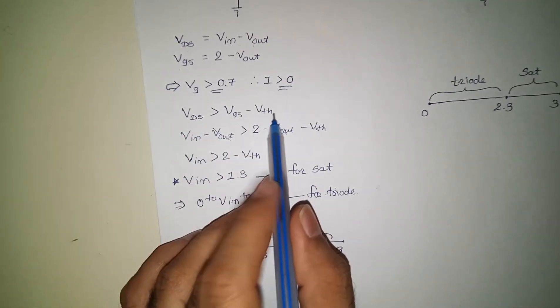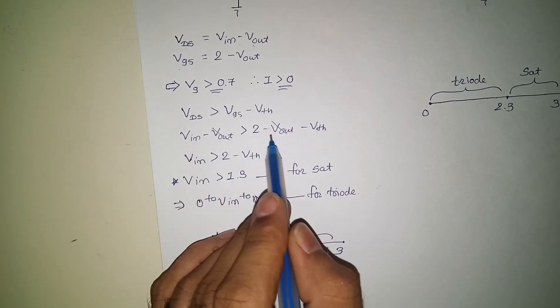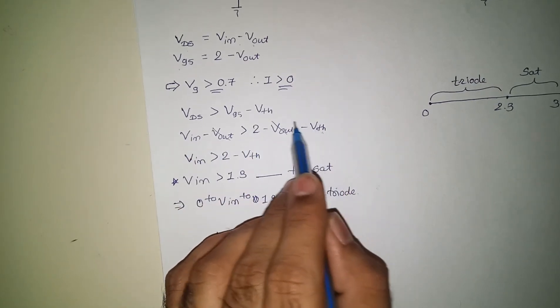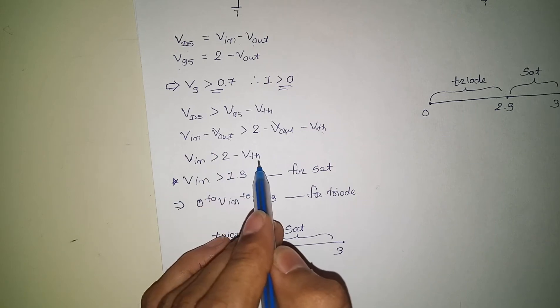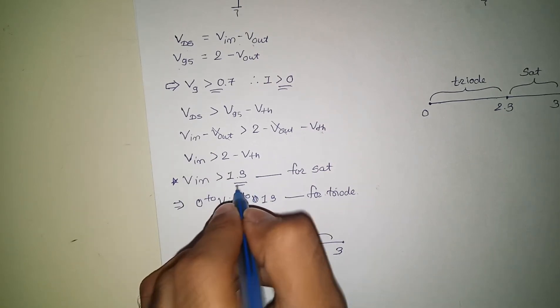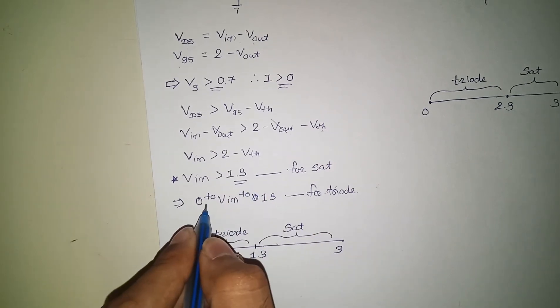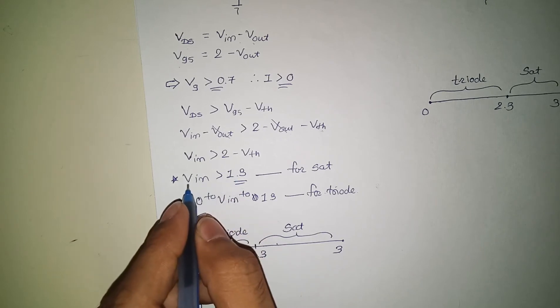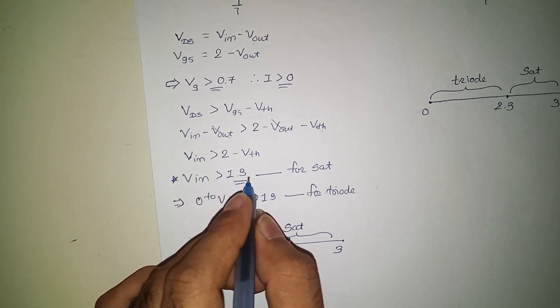Vds, this is Vgs minus Vth. Vout cancels. Vin will be greater than 2 minus Vth, that is 1.3 for saturation. From that, Vin should be greater than 1.3 for saturation.